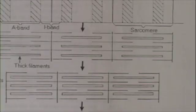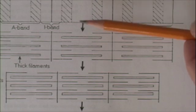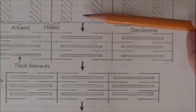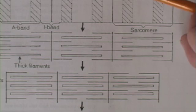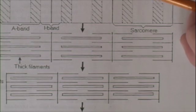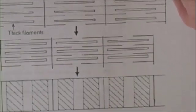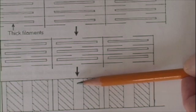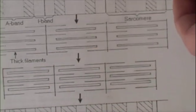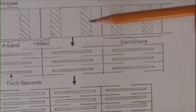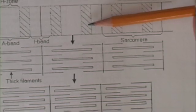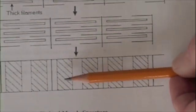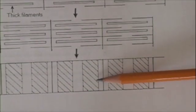Now while we're looking at this, let's look at one more thing. Notice that in this view, the light band I'm pointing to is rather wide. But in this view, the light band has gotten narrow. Also, in the first view, the dark bands are fairly narrow, and in this view, the dark bands are thick.